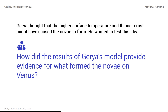Gurria thought that the higher surface temperature and thinner crust might have caused the novae to form. He wanted to test this idea. How did the results of Gurria's model provide evidence for what formed the novae on Venus? The model results matched the novae on Venus. This provided evidence supporting Gurria's idea that a thinner crust and higher surface temperature might allow melted rock to push up toward the surface, forming novae. This helps explain why there are novae on Venus, but not Earth.